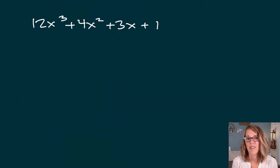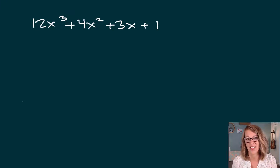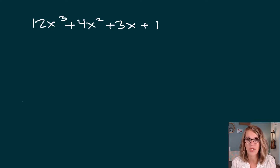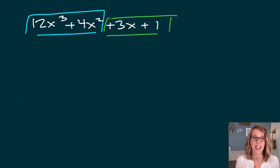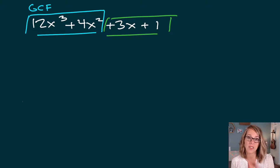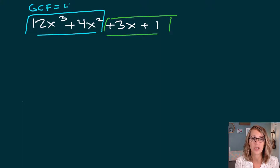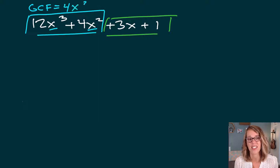Let's do another one. I have another four terms here. Notice how I've written it in descending order: x cubed, x squared, x, and then the constant 1 at the end — this is a good rule of thumb. I'll pair off the first group and the second pair and look for a GCF. For the blue group, 12 and 4 are both even, and 4 goes into both, so the GCF includes a 4. Both terms also have an x, so I get 4x squared.